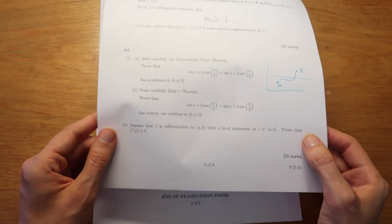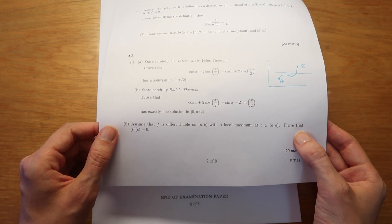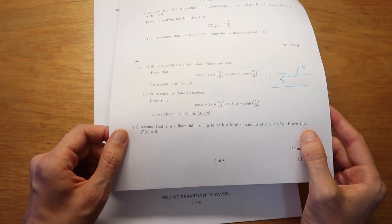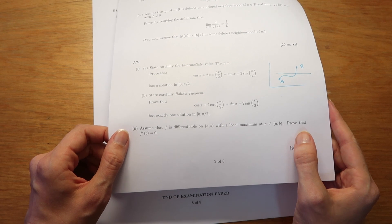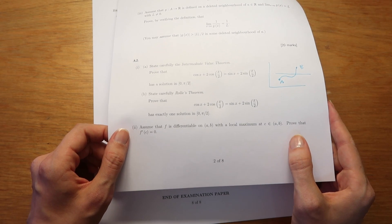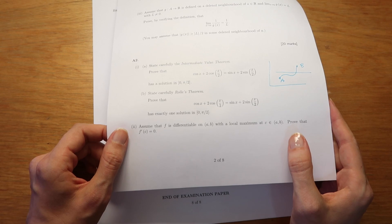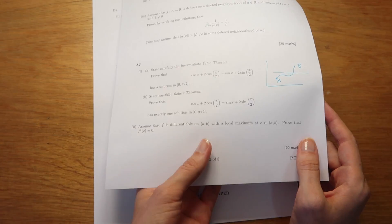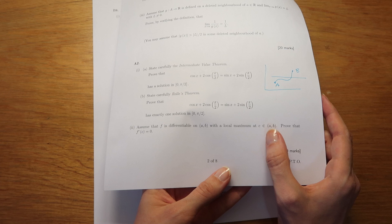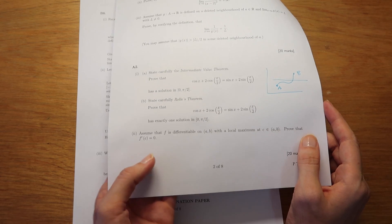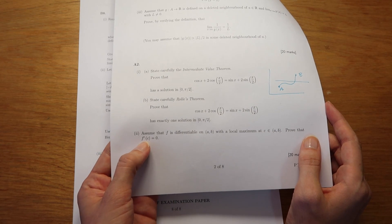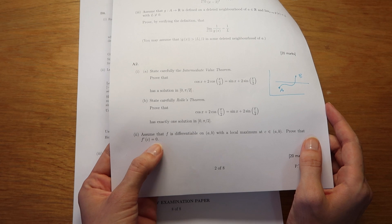Question part two down here is talking about what's probably quite a familiar idea in calculus. Assume that a function F is differentiable on a certain range A, B with a local maximum at C. Prove that the derivative of the function at point C is zero.